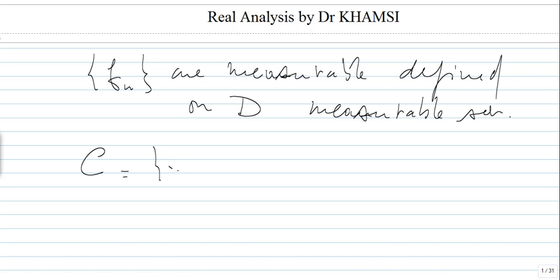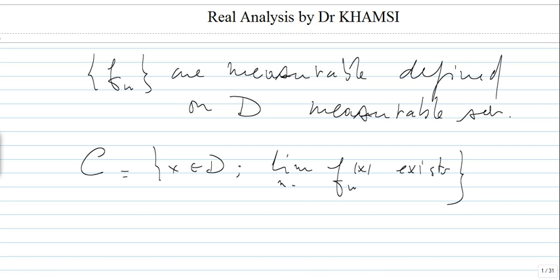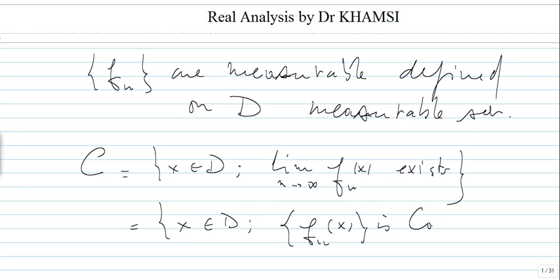If you look at C, the set of x in D such that the limit of F_n(x) exists — in other words, the sequence is convergent — this is the same as the set of x such that the sequence F_n(x) is Cauchy. We are using the completeness of the real line.